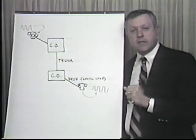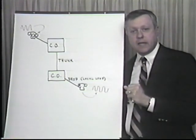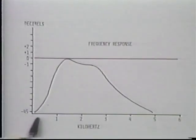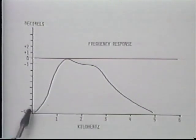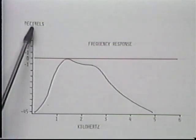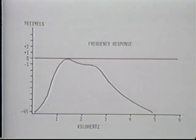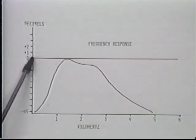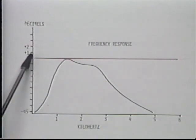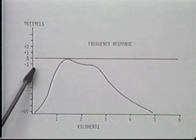Here is what the bandpass of a telephone circuit looks like in the United States. Across the bottom is a scale in kilohertz, or thousands of cycles per second. On the left side we measure the signal in decibels — a measurement of power on the telephone line. Whenever we put a signal in and get a gain, we measure it in a positive decibel. Whenever we get a loss, we measure it in a negative decibel.